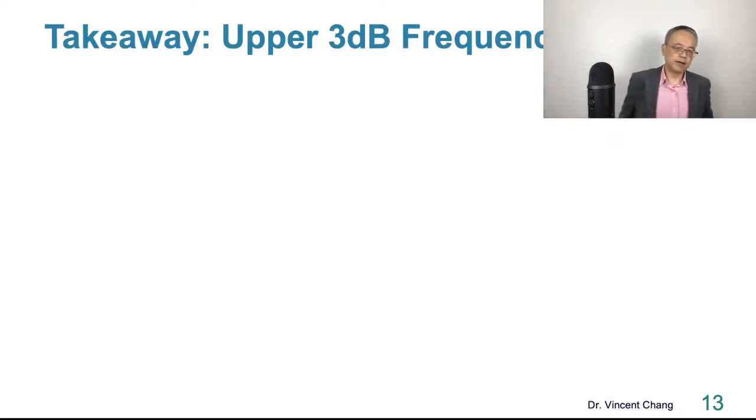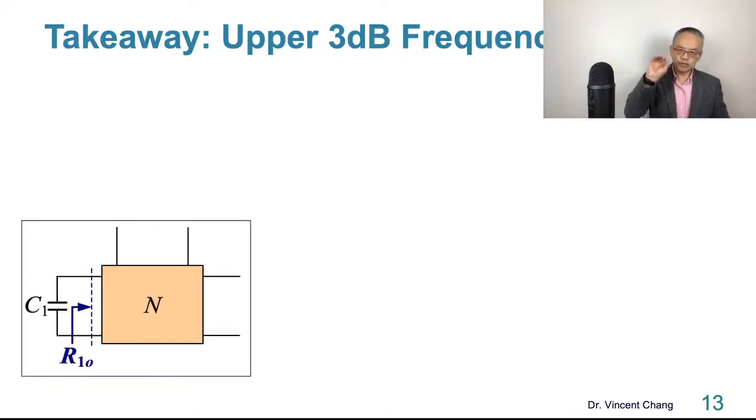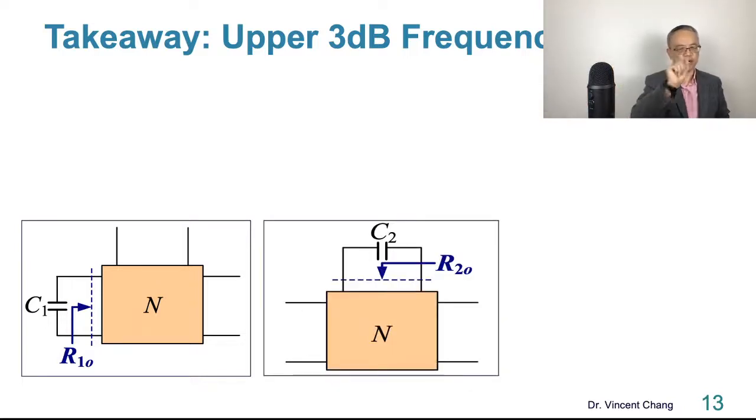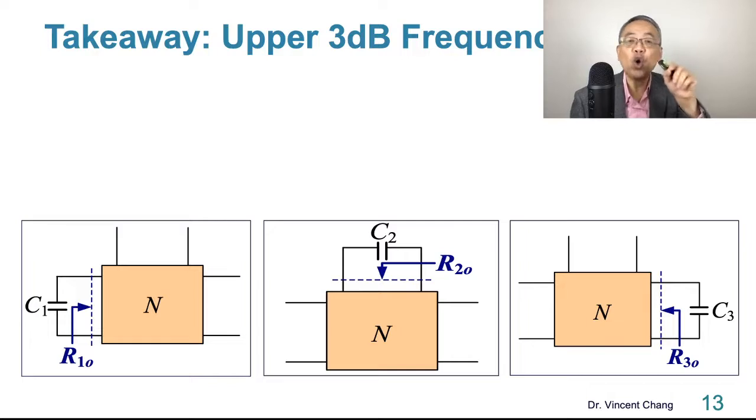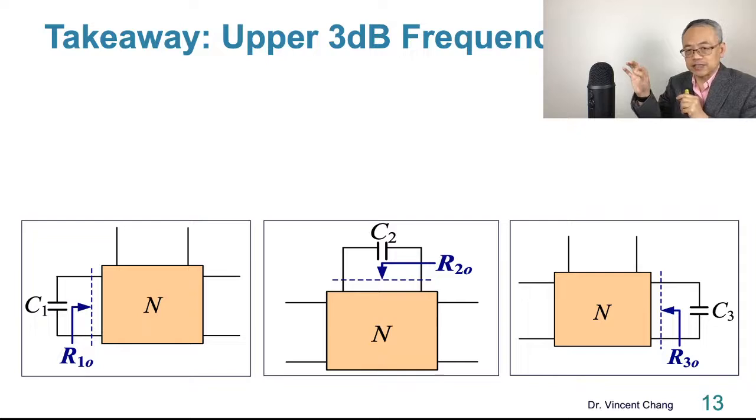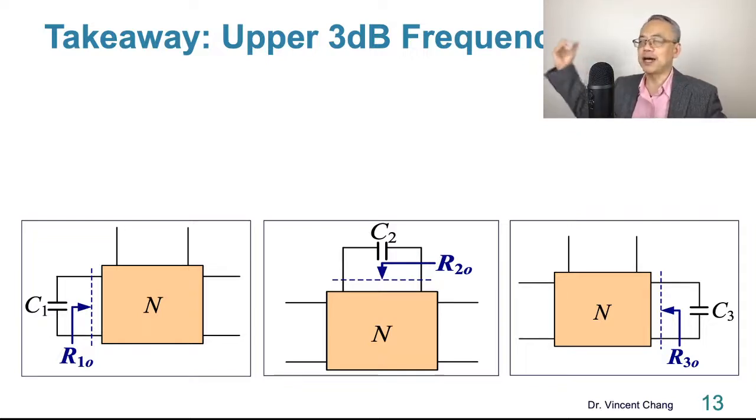So here's the takeaway. Open circuit time constant method is an approximate, an approximate is not the exact solution. It's an approximate method to estimate the upper three decibel frequency of an amplifier. When you do this, the key step, step number one, set VI to zero. Number two, if there are three capacitors, you just open circuit 2 and 3 and find R1O. Open circuit 1, 3, find R2O. Open circuit C1 and C2 and find R3O. So what is R3O? That's not R3O, that's the second subscript. It's called O, O, open circuit. So the R3O is the third resistance seen by C3 when the rest of the capacitors are open circuit. So this is the key step.